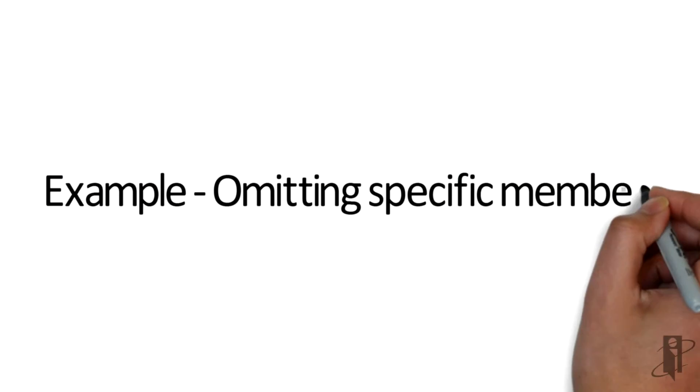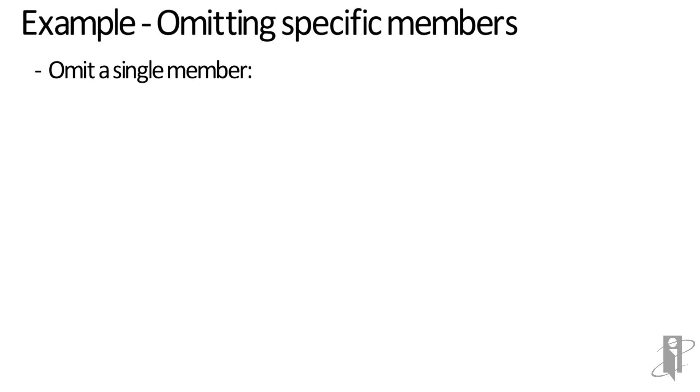I can use that same technique but change the DIM to an MBR if I want to omit specific members themselves. So let's say in my scenario dimension I had a member called variance with a formula on it and it was for some crazy reason stored. I could say CALC ALL EXCEPT MBR variance and it's going to do the entire database except that specific member.